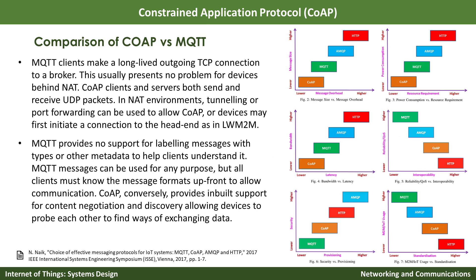MQTT clients make a long-lived outgoing TCP connection to the broker. Because of that, it is not a problem even though the device might be behind a NAT or network address translation or a router. On the other hand, CoAP clients and servers both send and receive data using UDP, which does not maintain a connection. In that case, they might want to use tunneling or port forwarding.